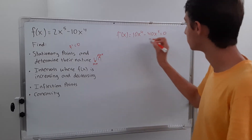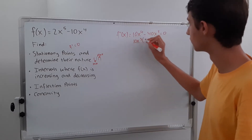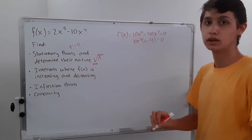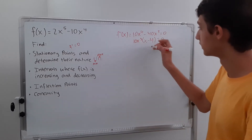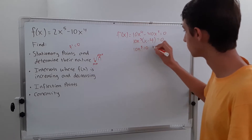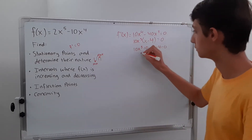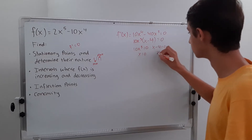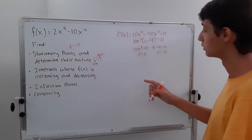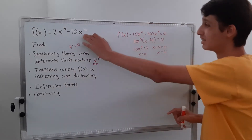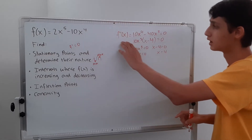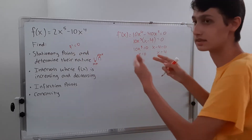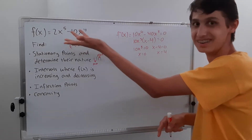Now we just solve. We can factor out a 10x cubed from this, and then we're left with x minus four, all equal to zero. We set both terms equal to zero: 10x cubed equals zero, and x minus four equals zero. Dividing by ten and cube rooting gives x equals zero, and adding four gives x equals four. Now we plug these into the original — not the derivative — because the derivative tells you the slope. If you want a point on the graph, you need the original equation.